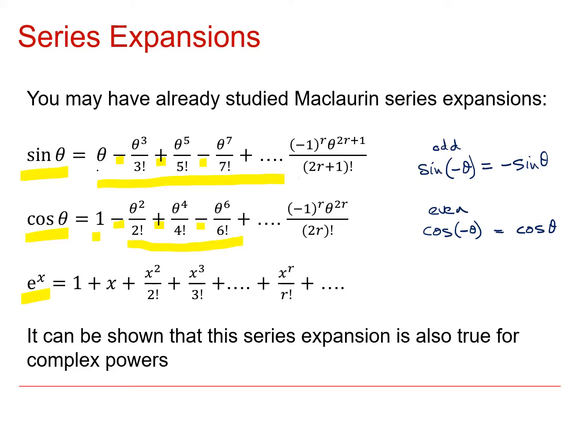The other thing that we know about these two functions is that for small theta sine theta is approximately equal to theta. By small theta I mean something in which theta cubed and above are insignificant. And so for small theta, cos theta is approximately 1 minus theta squared over 2. And you may have seen all of these things relating to sine and cos before.